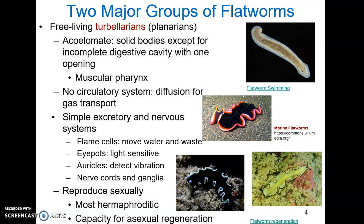Looking in more detail at the free-living turbellarians: these are triploblastic but their bodies are solid — they are acoelomate. They do have an incomplete digestive cavity, kind of like a gastrovascular cavity, with only one opening at the bottom of the organism. They have a muscular pharynx that protrudes from this opening and can work to tear up food. Turbellarians have no circulatory system; they rely on diffusion to transport gases. They also have very simple excretory systems, including flame cells, which are bulb-like structures with flagella that move water and waste through tubules and out the body through pores.